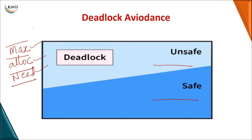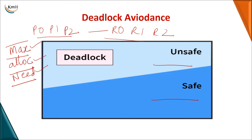For example, we take processes P1, P2, P3 with resources R0, R1, R2. Each process may request a particular resource at a particular time, and you have to find a sequence where resources can be granted to all the processes. If you are able to grant resources to all processes in any sequence regardless of their request order, then you call that a safe state. If you are not able to find such a sequence, it leads to an unsafe state.